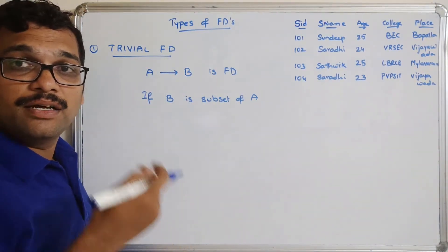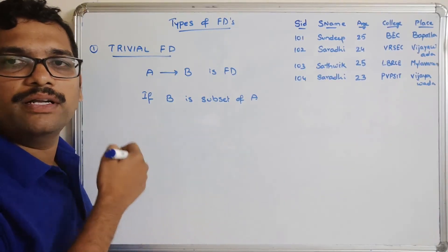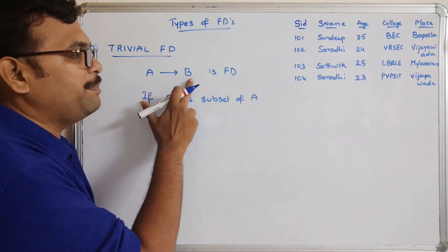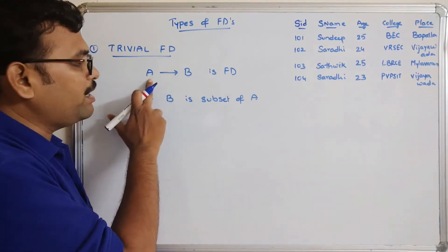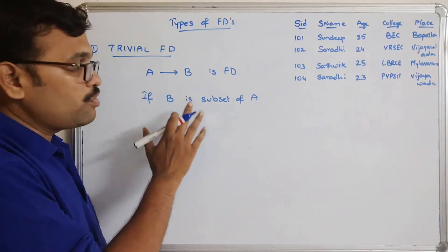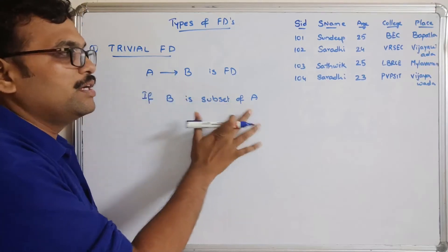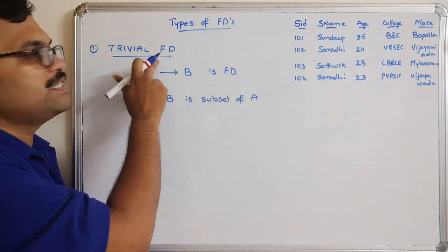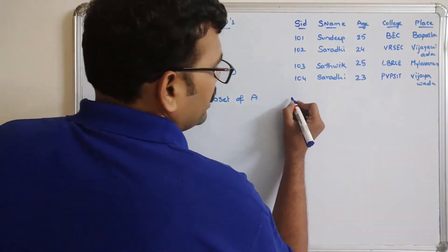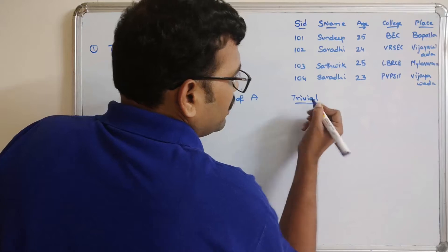That means the dependent should be a subset of the determinants. Here A and B are the determinant and the dependent. A can have multiple attributes and B can have multiple attributes. Whatever attributes are in B should be a subset of A. Such a functional dependency is called a trivial functional dependency.